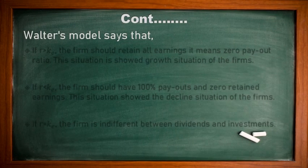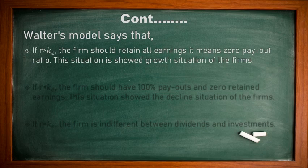Walter Model says: number one, if R is greater than K — meaning the required rate of return is greater than the cost of capital — the firm should retain all earnings, which means a zero payout ratio. This situation shows the growth situation of the firm. In a growing firm, Walter suggests there is no need to distribute dividends; pay zero dividend and reinvest all money in the business, as retained earnings are the only source available.